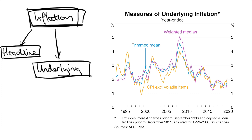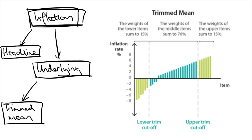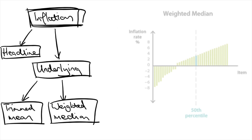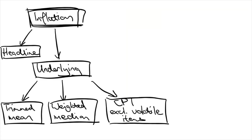These include trimmed mean, weighted median, and CPI excluding volatile items. Trimmed mean is the average rate of inflation after trimming away the items with the largest price changes — it's the weighted average of the middle 70% of items. Weighted median is the inflation rate of the CPI item at the middle of the price changes. CPI excluding volatile items is the average inflation rate of all items in the CPI basket except for fruit, vegetables, and fuel, because those are volatile items.